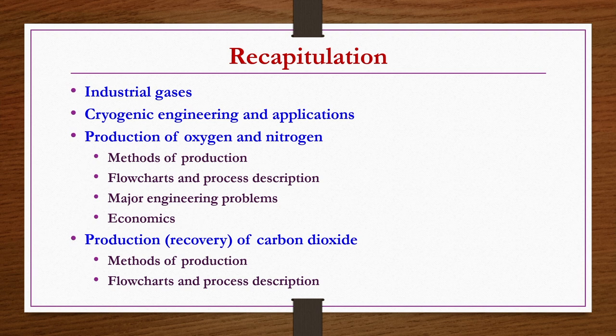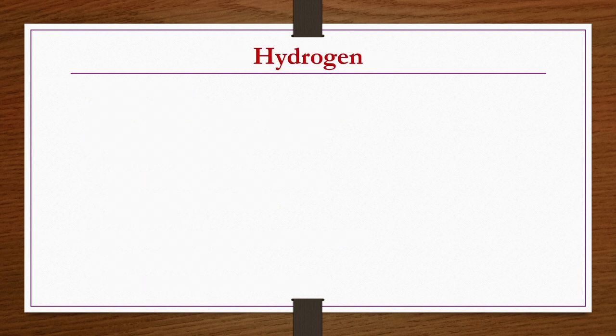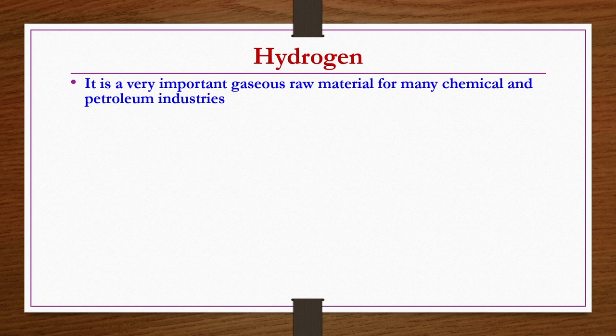In today's lecture, we are going to discuss hydrogen as an industrial gas. It is a very important gaseous raw material for many chemical and petrochemical industries. For example, wherever hydrogenation reactions or hydro-treatment is required, hydrogen is needed. Not only for hydrogenation, but also for other chemical productions like ammonia synthesis. There are several applications of hydrogen gas in chemical and petroleum industries.